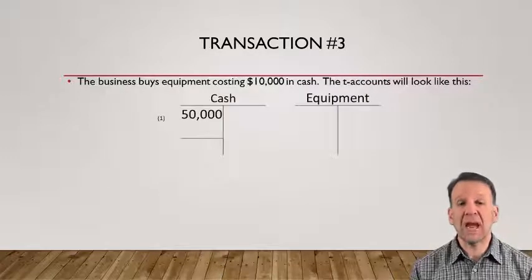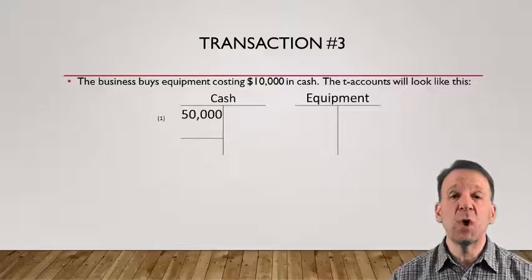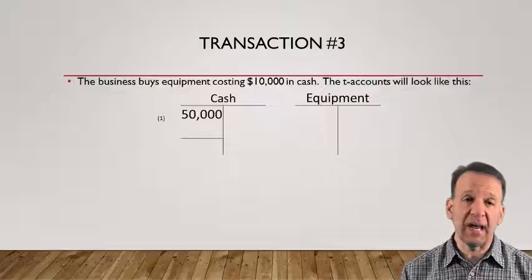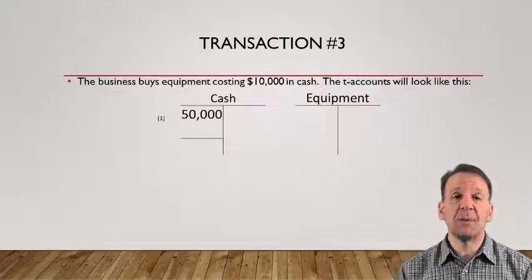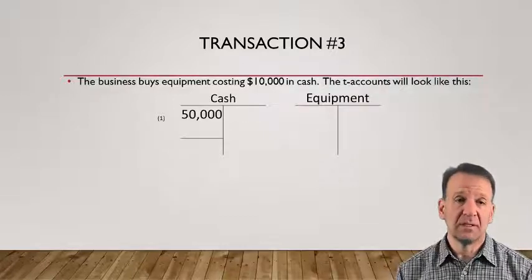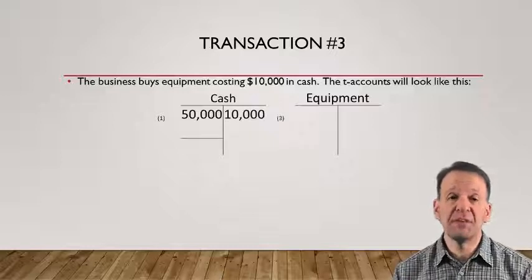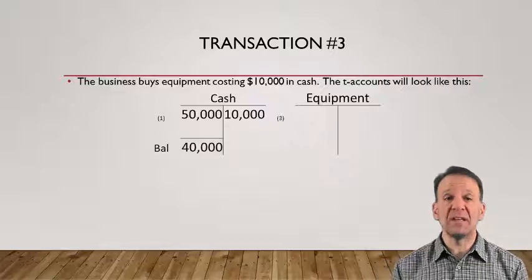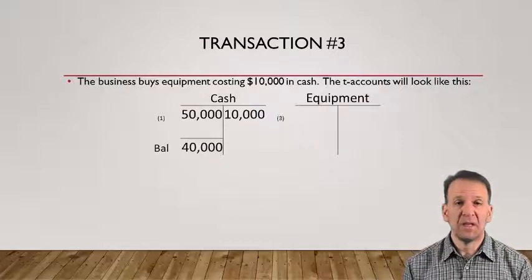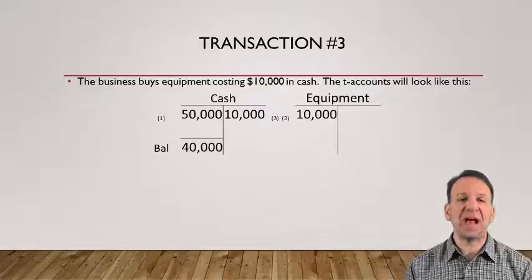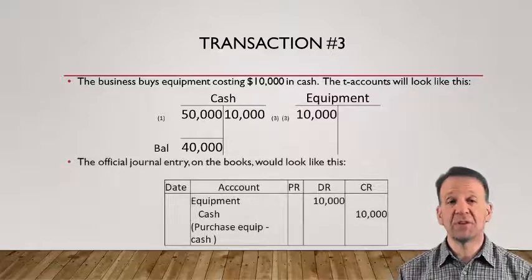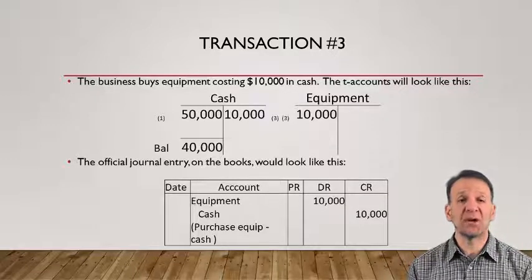For transaction number three, the business bought equipment for $10,000. You can see that the cash T-account has the $50,000 from a previous transaction, and now a $10,000 credit from this transaction. The overall balance then is a $40,000 debit balance. The equipment account is an asset and increases with a $10,000 debit entry. The official journal entry is below: debit equipment and credit cash. Debits are always first.